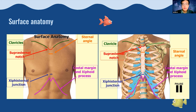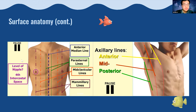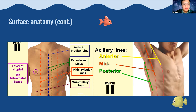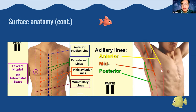There are several anatomical reference lines: the median line, parasternal lines adjacent to either side of the sternum, mid-clavicular lines drawn from the midpoint of the clavicle inferiorly, and mammary lines crossing the nipple — which is variable but usually around the fourth intercostal space. Moving laterally, the axillary lines include the anterior axillary line, mid-axillary line along the armpit, and posterior axillary line at the back of the armpit.